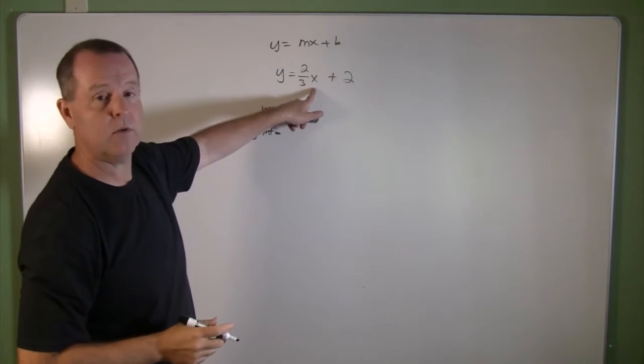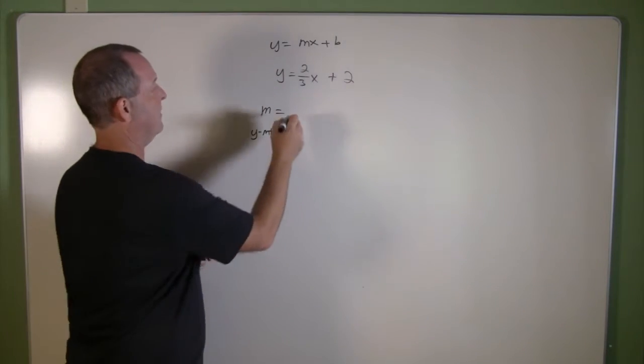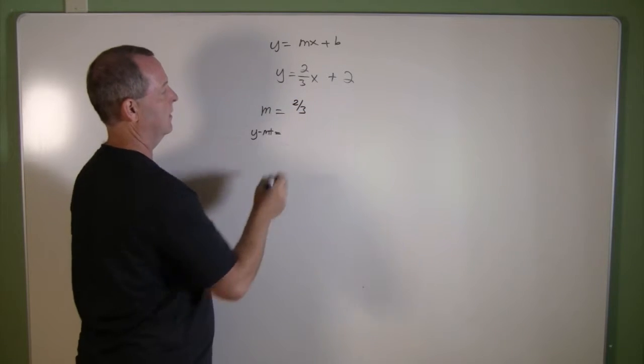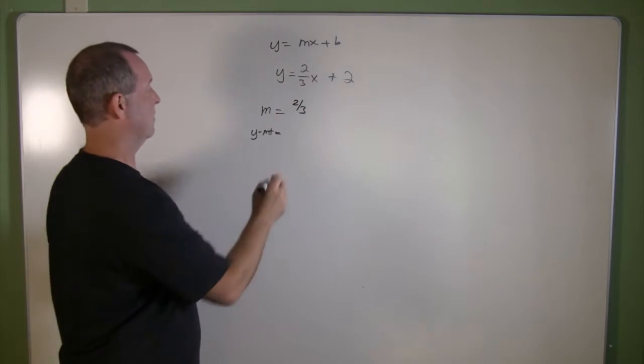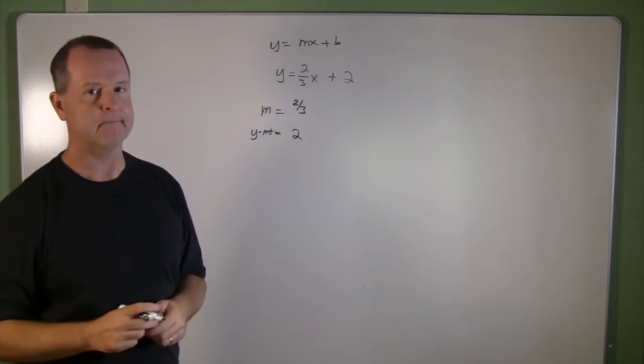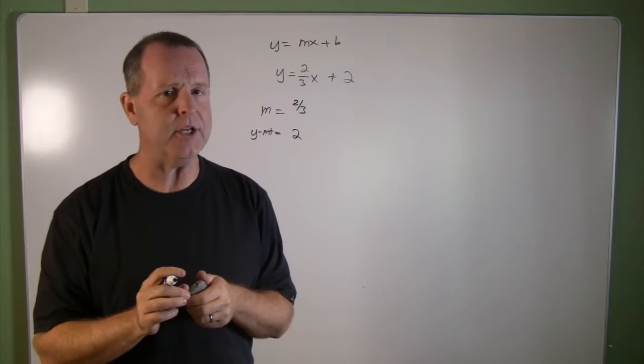Well, the slope is the value that precedes the x. So I have a slope of two-thirds, and I have a y-intercept of two. So I think I have enough information.